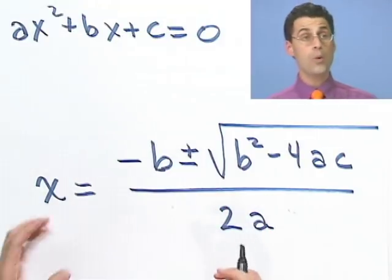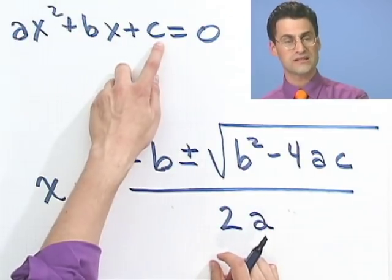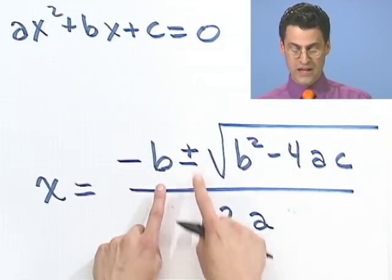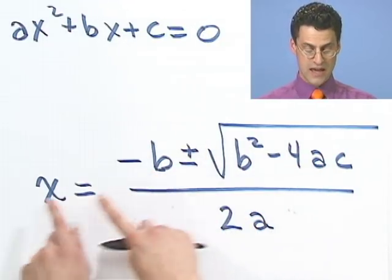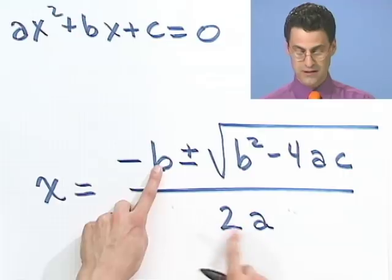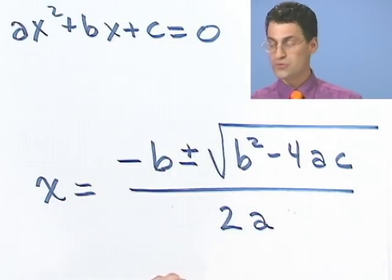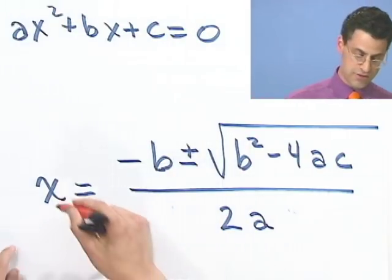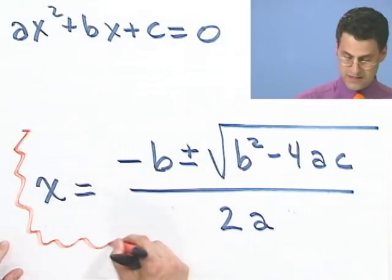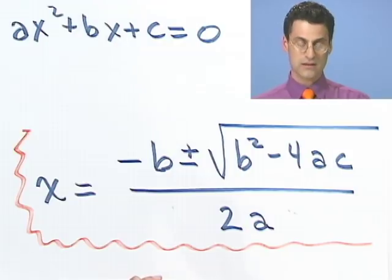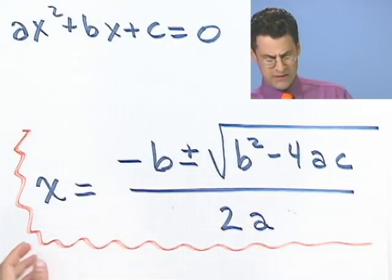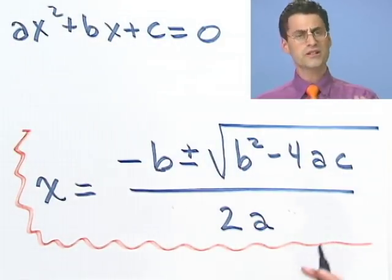And this will always work no matter what a, b, or c is. We could just plug them in and we'll get the two solutions. x equals this thing with a plus, x equals this thing with the minus there. And in fact, this is called the quadratic formula. The quadratic formula because it allows us to solve any quadratic equation. And so even though it may sort of look intimidating and so forth, you can see the genesis of it. You could see where it came from. It just came from taking a general form of this and just completing the square. That's all.